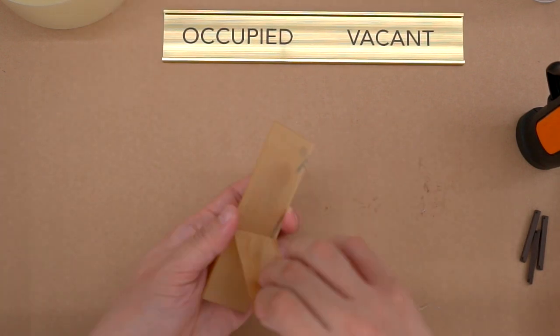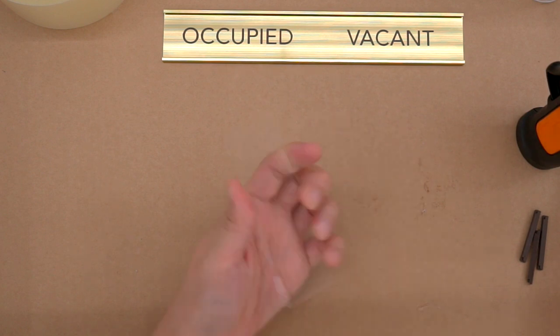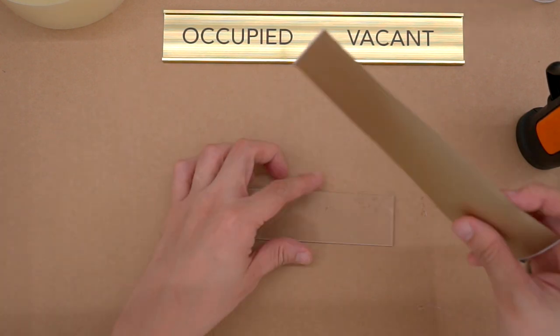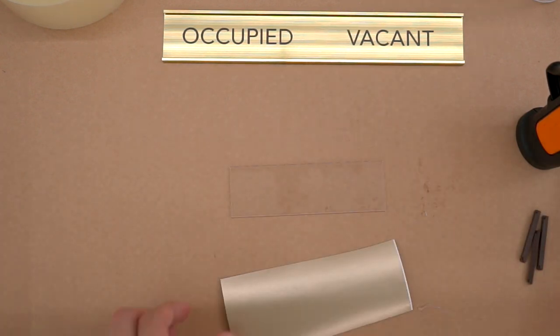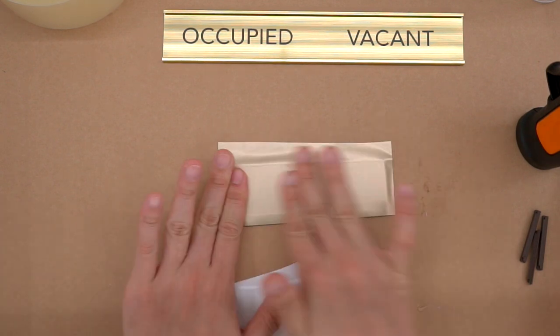This piece of acrylic will be used to cover one of the text, so I start by peeling off the protective layer and pasting a piece of vinyl sticker over it.